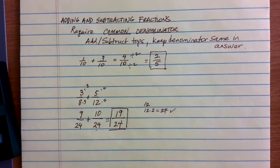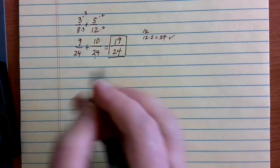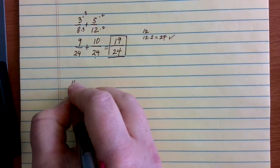19 is a prime number; there's nothing in there that will also go into 24, so I can stop. Let's go ahead and try one last example. Make sure we know what we're up to here.